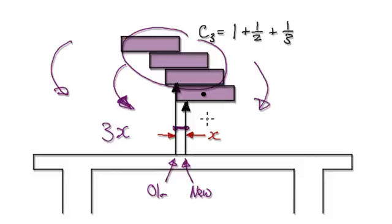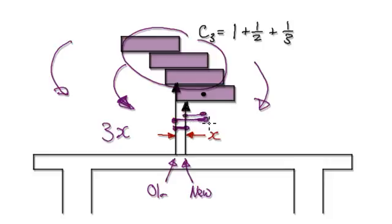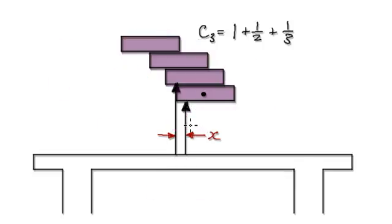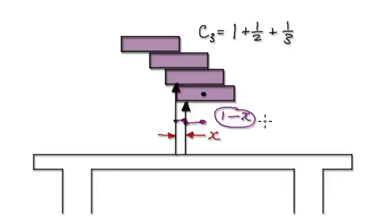Now let's look at the clockwise torque. Don't forget, each brick has a length of two, so this has a length of two. From here to here it would be one, and from here to here would be one. But we want to know this distance here, so it would be one take away x — that would give us the distance that we want. So this distance here is given by one take away x, times the mass of one block, which would be one.